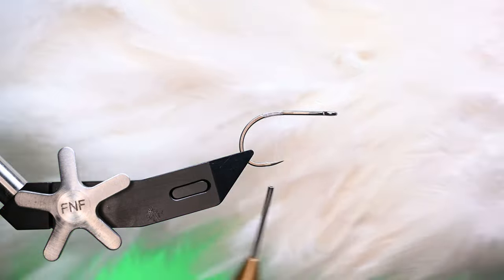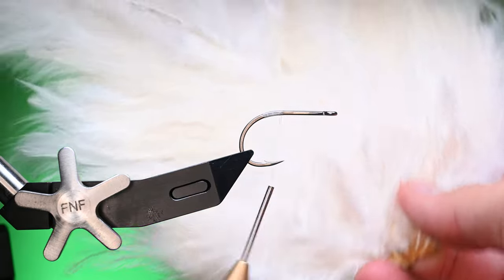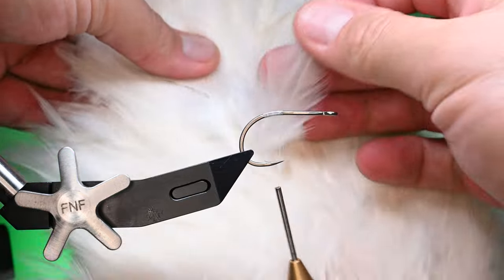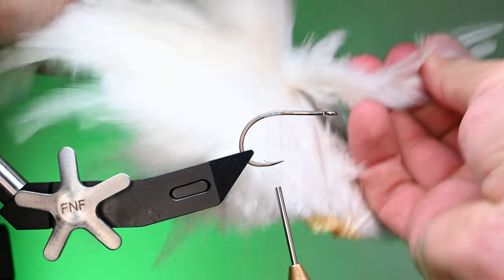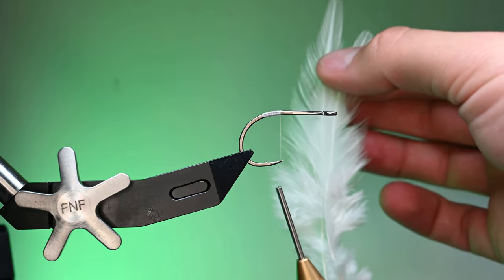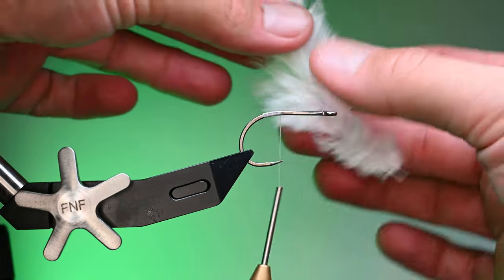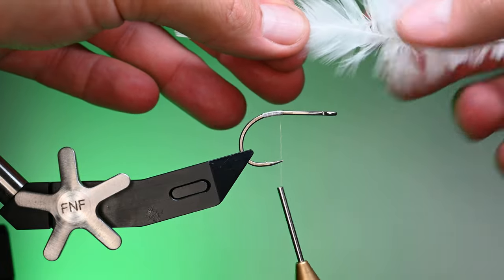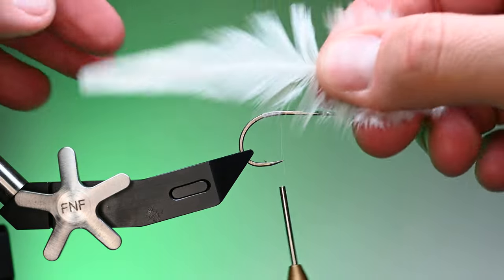We're going to be using some Whiting Farms. This is an American Hackle saddle from them in white—a very effective saddle you can use on all sorts of flies and particularly streamers. I'm going to pull off two from the center left and then we'll pull off two from the center right. These look pretty good to the length.